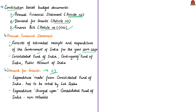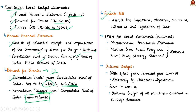The Demand for Grants is a document based on Article 113. The estimates of expenditure made from the Consolidated Fund of India, as stated in the Annual Financial Statement, have to be voted by the Lok Sabha. Note that there is a difference between expenditure made and expenditure charged upon the Consolidated Fund of India — the expenditure charged under the fund is not votable by the Lok Sabha. The Finance Bill details the imposition, abolition, remission, alteration, and regulation of taxes as proposed in the budget, and under Article 110, this Finance Bill is a money bill.